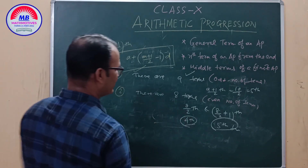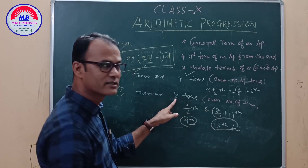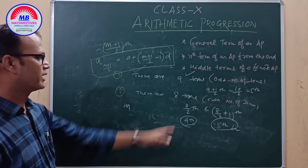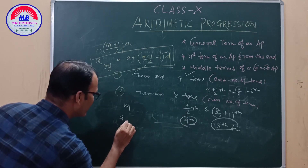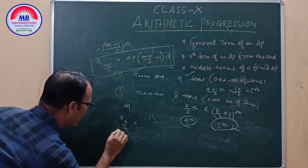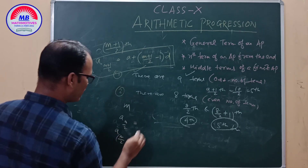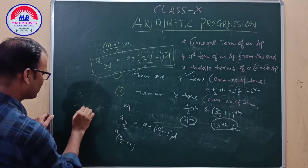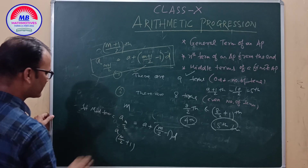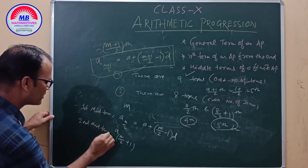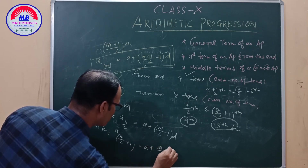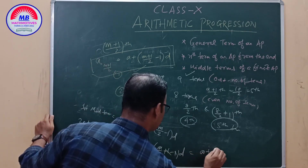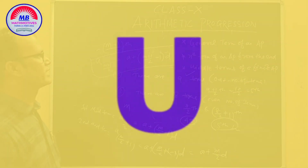So when we apply the formula a + (n − 1)d for the middle term positions, we get the values for the middle terms. Okay, just check it.